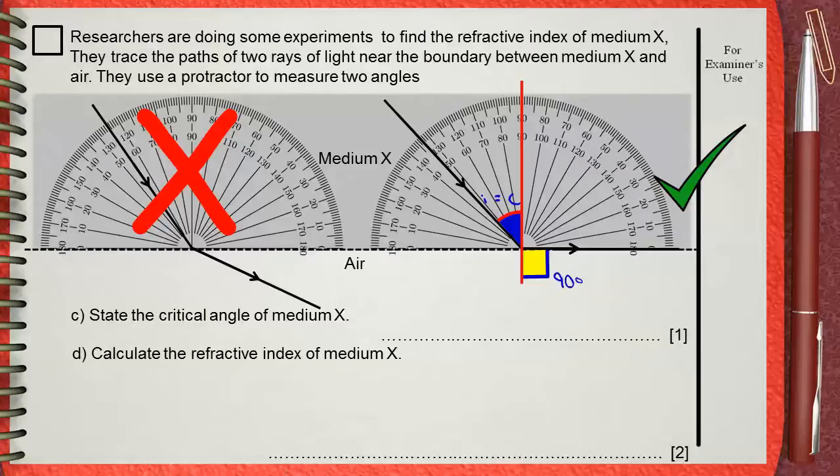The second problem, which is specific for this question specially, is how to measure the critical angle? Actually, the protractor is drawn in the diagram by the examiner himself. In fact, this protractor is not positioned correctly, because